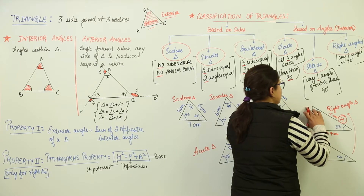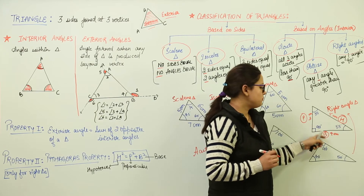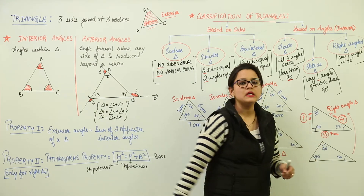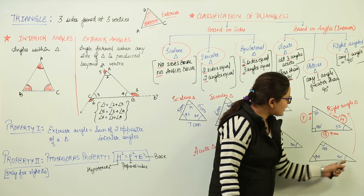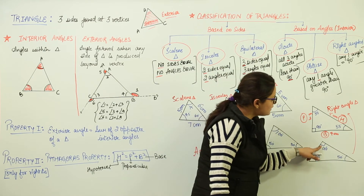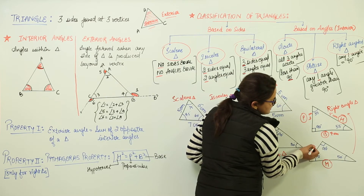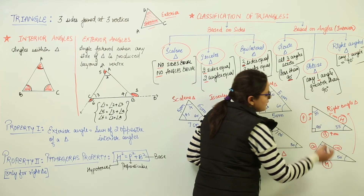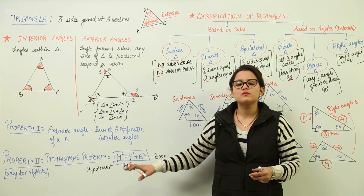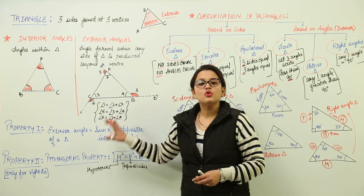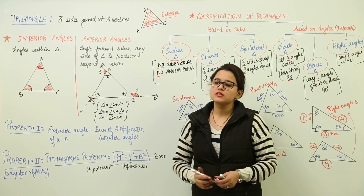The side opposite to 90 degrees is the hypotenuse, one side is the base, and the other is the perpendicular. You place the values of hypotenuse, base, and perpendicular into the Pythagoras theorem and cross-check whether it is satisfied. For any right-angled triangle, if H² = P² + B², that satisfies the Pythagoras property. This property is valid only for right-angled triangles — no other triangle.